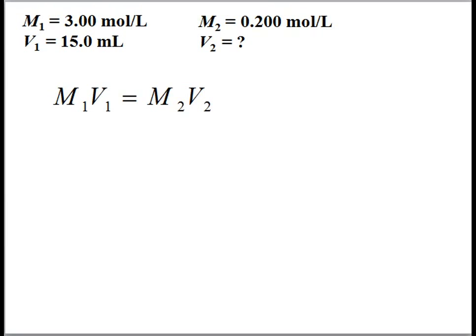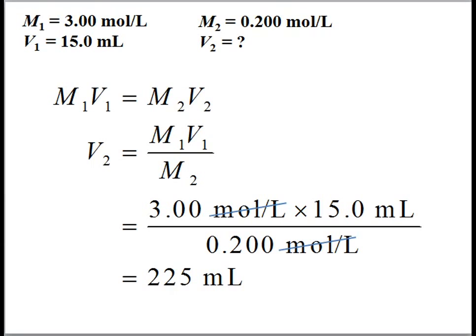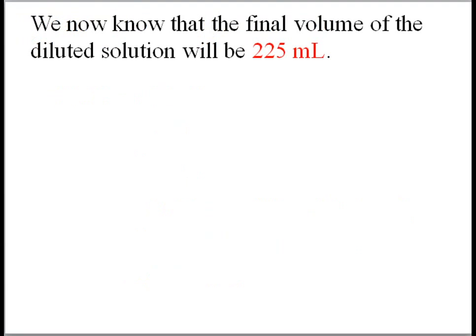We rearrange the dilution formula to solve for V2. V2 equals M1V1 over M2. M1 is 3 moles per liter, V1 is 15 milliliters, and M2 is 0.2 moles per liter. The units of concentration, moles per liter, cancel from the top and bottom of the fraction, leaving us with the unit milliliters. The final volume V2 is calculated as 225 milliliters.